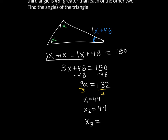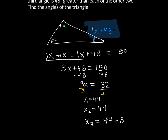For the third angle, I come back and plug into that third equation, which was X plus 48. I add 44 plus 48, and that gives me the larger angle is 92 degrees. So 44 and 92 are the smallest and largest angles of that triangle.